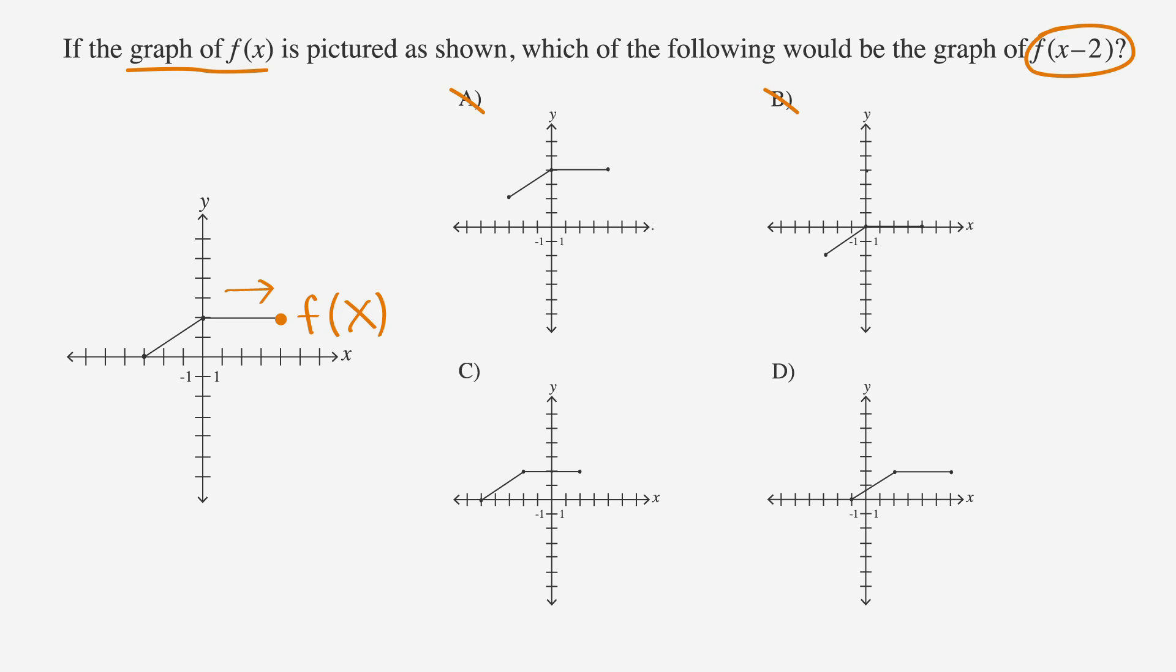If we pick a distinctive point on the graph, like this one at (0,2), it will be moved to the right by 2 in this transformation. So which of the remaining graphs has been shifted to the right by 2? Not choice C, our point was moved to the left by 2. The only answer choice showing the point being moved to the right by 2 is choice D. That's our answer.